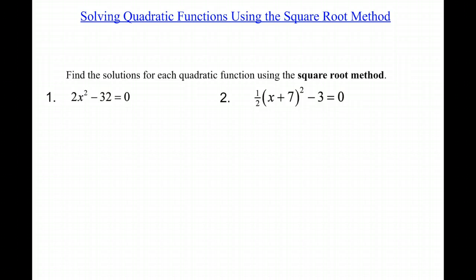Now, this idea of using the square root method is most useful when the equation is in vertex form. Looking at the two examples that I have below, it's probably easy to see that this second one has the vertex at negative 7, negative 3.